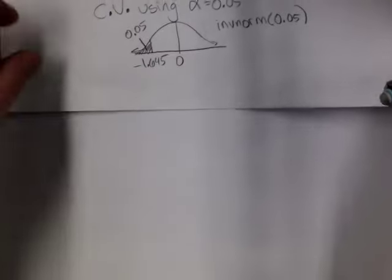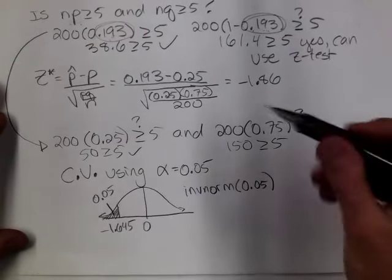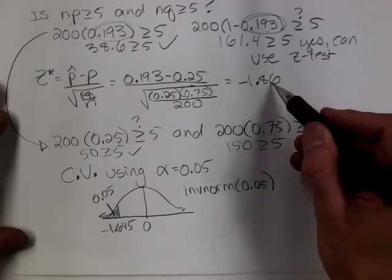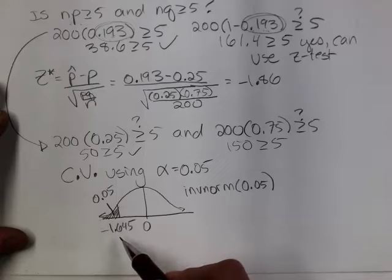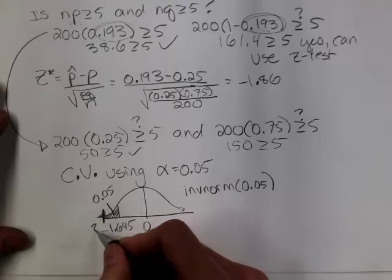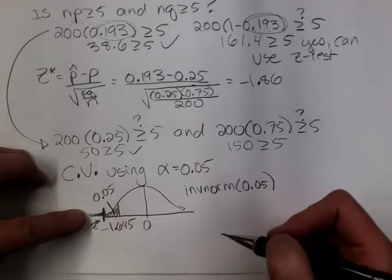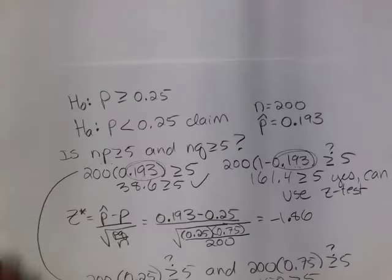Now we have enough information to make a decision. Our standardized test statistic is negative 1.86 — it's in the rejection region, below negative 1.645. My test statistic is way down in that lower tail. I'm going to find the corresponding p-value — that would be that small area in the tail. So right now I know I'm rejecting the null hypothesis.